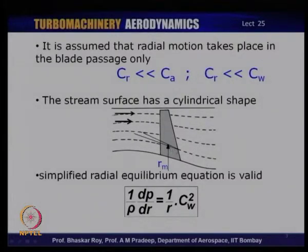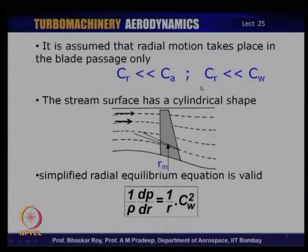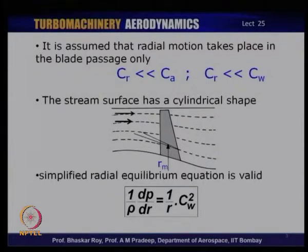If you take the meridional path of the flow at any point, the flow would have an axial component. If passing through a rotor blade, it will have acquired a whirl component, and because of the nature of the meridional path, it will acquire a certain radial component. Because of the geometry of the flow track, the flow sometimes acquires a radial component that is inevitable due to the aerothermodynamics of the flow through the axial flow turbine.